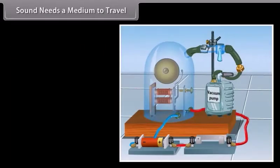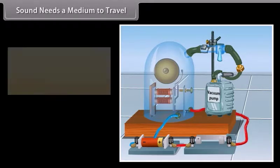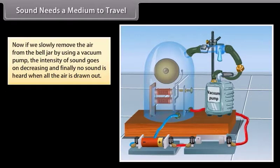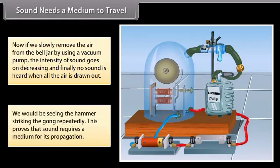Look at this figure. Here an electric bell is suspended inside an airtight glass bell jar connected to a vacuum pump. As the electric bell circuit is completed, the sound is heard. Now if we slowly remove the air from the bell jar by using a vacuum pump, the intensity of sound goes on decreasing and finally no sound is heard when all the air is drawn out. We would be seeing the hammer striking the gong repeatedly. This clearly proves that sound requires a medium for its propagation.